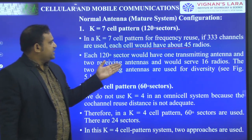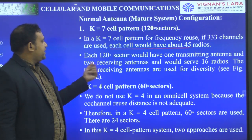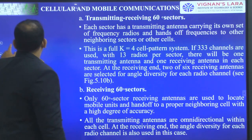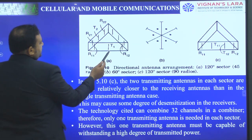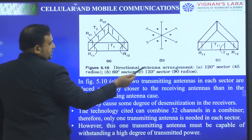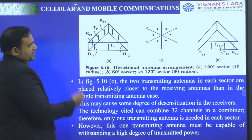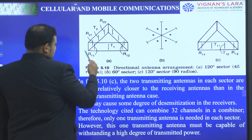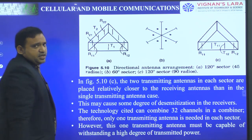Each 120-degree sector would have one transmitting antenna and two receiving antennas. As shown in the figure, figure A represents the 120-degree sector of 45 radios. Each sector shows one transmitting antenna and two receiving antennas.